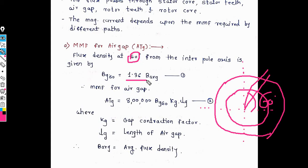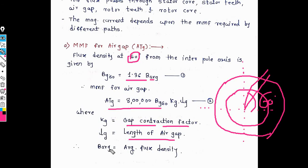The air gap flux density at 60 degrees gives 1.36 times the average flux density. That means maximum flux density at 60 degrees equals 1.36 times the average flux density. At that instant, magnetic flux is always present. The MMF for air gap equals 800 × B × kg × Lg, where kg means gap contraction factor, Lg means length of air gap, and B average means average flux density. The MMF for air gap depends on flux density, average flux density, and length of air gap. This is the first point under calculations of magnetizing current.